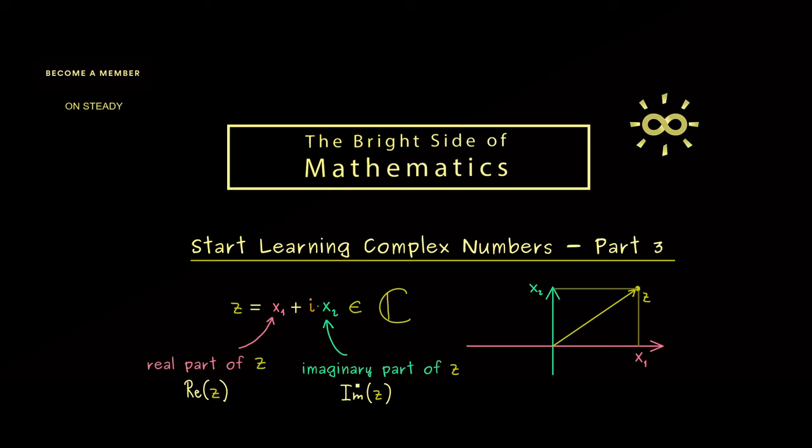Okay now in the picture you should also see that we have visualized the complex number with an arrow. And of course such an arrow has a well-defined length. And this distance we usually call the absolute value of the complex number z.